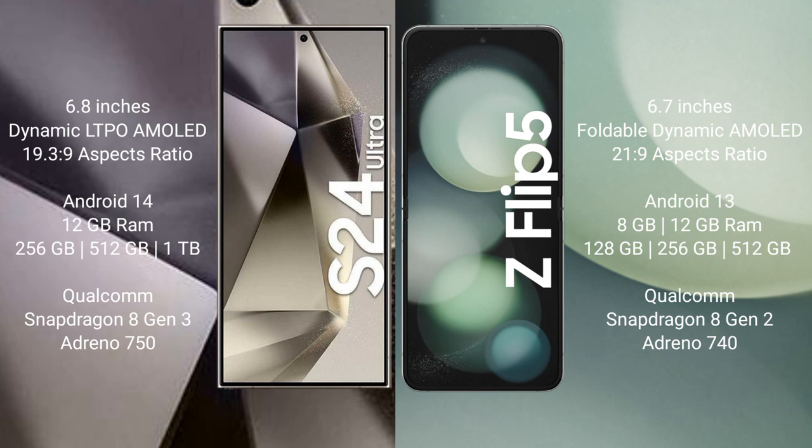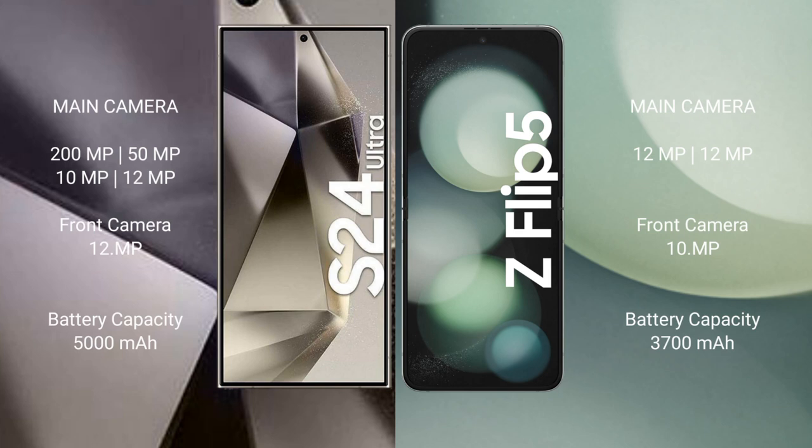The Samsung Galaxy S24 Ultra offers 256 GB or up to 1 TB internal storage, powered by the Qualcomm Snapdragon 8 Gen 3 processor with Adreno 750 GPU. The Samsung Galaxy Z Flip 5 comes with 8 GB RAM and 256 GB or 512 GB internal storage, powered by the Qualcomm Snapdragon 8 Gen 2 processor with Adreno 740 GPU.